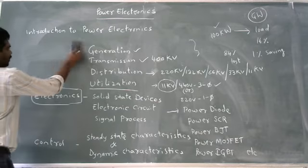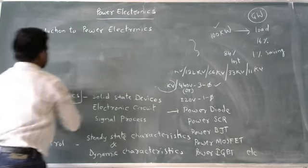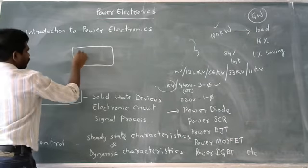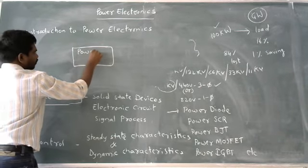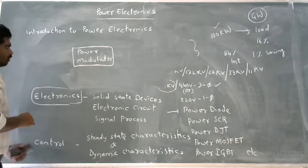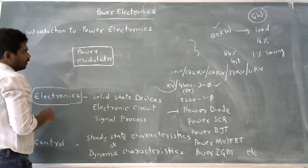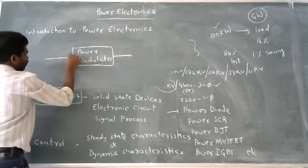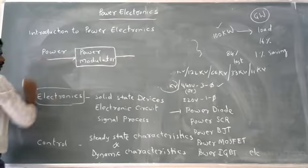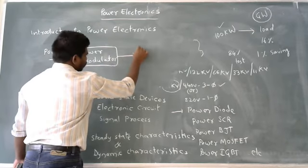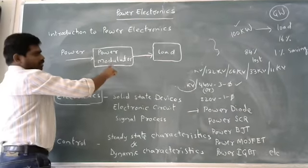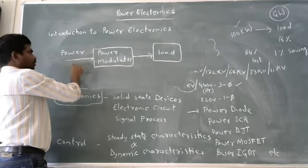Generally when we define the power electronics, there is a power electronics module. Power electronics module is nothing but the power electronics configured circuit. We are giving input to this - on one side is power, on this side is load. The power electronic circuit is going to be helping the power to send to the load.